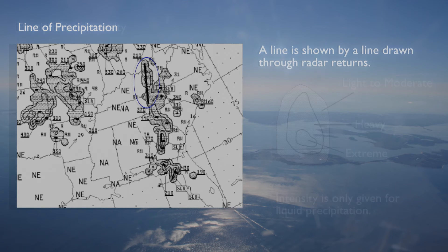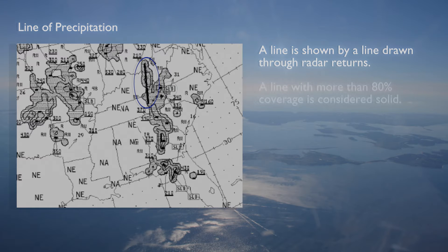A line of thunderstorms is indicated on the chart by a solid line drawn through the radar returns. If there is eight tenths or greater coverage along a line, the line is considered solid and an SLD label will be placed on the chart at both ends of the line.